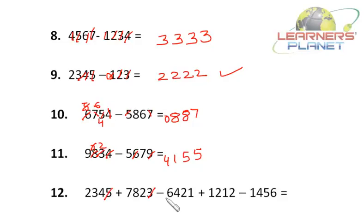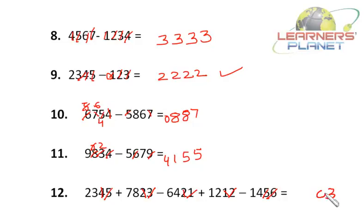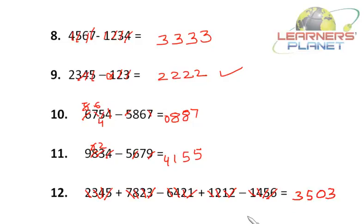So: 5 plus 3 is 8, minus 1 is 7, plus 2 is 9, minus 6 is 3. Then 4 plus 2 is 6, minus 2 is 4, plus 1 is 5, minus 5 is 0. Then 3 plus 8 is 11, minus 4 is 7, plus 2 is 9, minus 4 is 5. Then 2 plus 7 is 9, minus 6 is 3, plus 1 is 4, minus 1 is 3. So the answer is 3, 5, 0, 3. We didn't copy the problem anywhere — we did both addition and subtraction simultaneously.